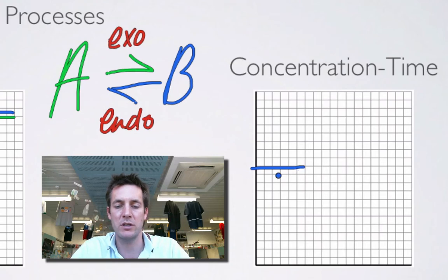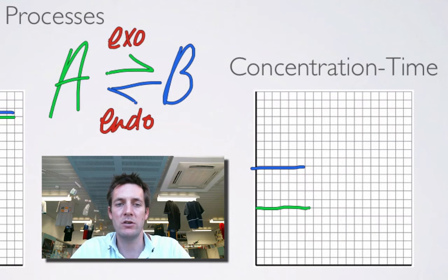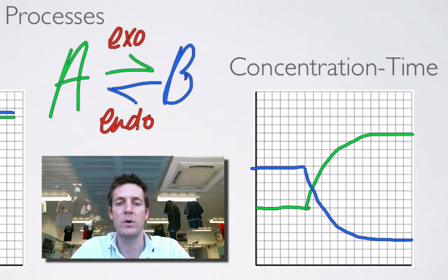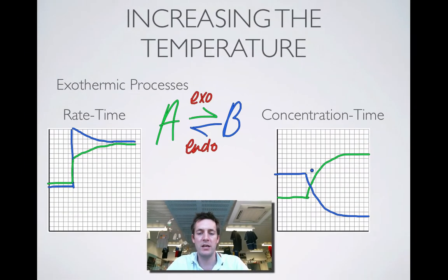Concentration-time graphs: marking these at arbitrary heights. Some change happens — we've increased the temperature. Exothermic process, so it's favouring the backward reaction, so the amount of reactants is going to increase. Changing it by a different amount just to show it can vary — about nine squares change, so the other one is going to change by the same amount, because we've got a one-to-one mole ratio. And we're back at equilibrium when these two concentrations are constant.